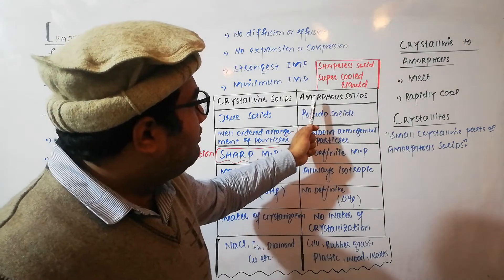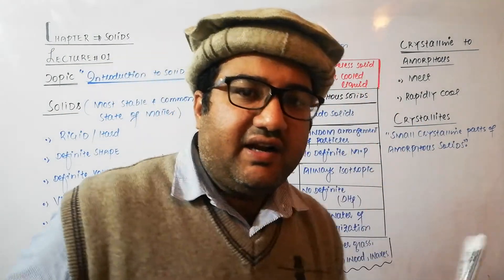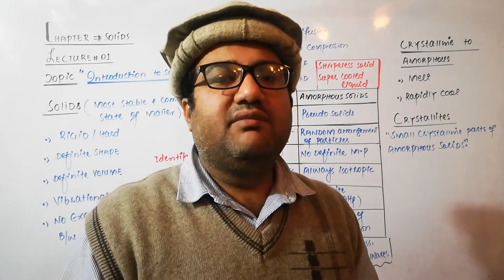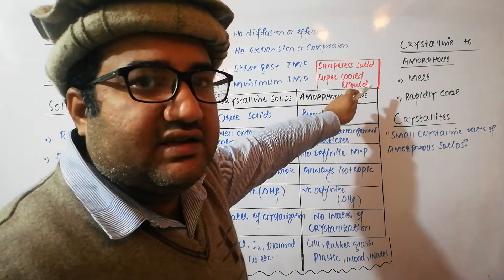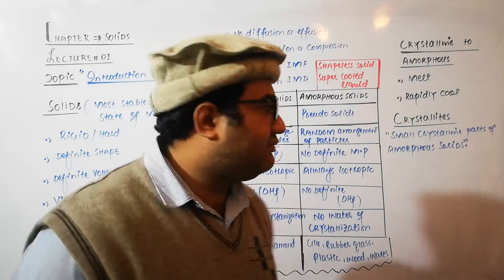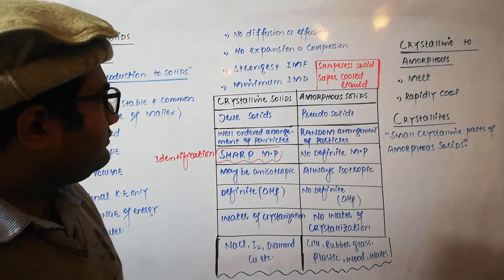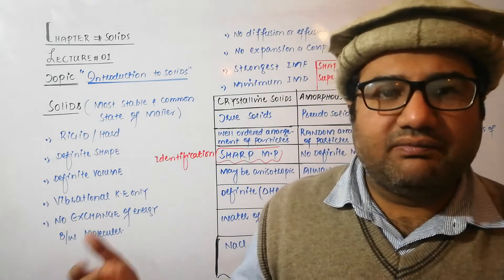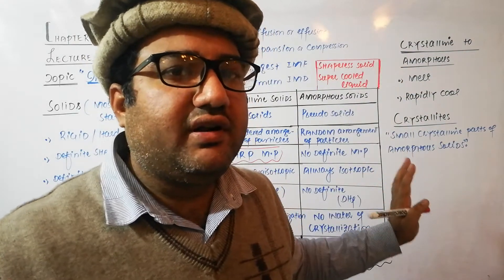Amorphous means 'a' meaning absent and 'morph' meaning shape — so amorphous means there is no proper shape, which is why they are called shapeless solids. This does not mean they have no definite shape; rather, they do not have a definite ordered arrangement of particles, which is what the term 'shapeless solid' refers to. There is a random arrangement of particles in three dimensions. They are also called pseudo solids or super-cooled liquids, because like liquids, they do not have an ordered arrangement of particles.